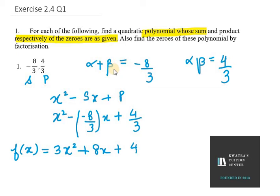For zeros what we need to do is make f(x) equal 0.